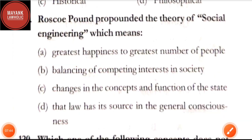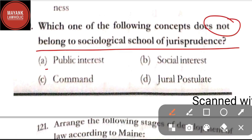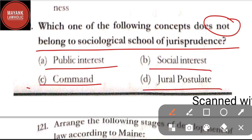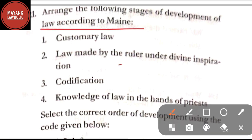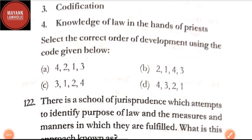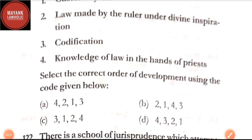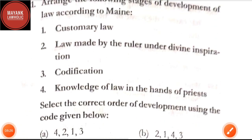Question number 120: which one of the following concepts does not belong to sociological school of jurisprudence — option A: public interest; option B: social interest; option C: command; option D: general postulate. The correct answer is option C, command. Question number 121: arrange the following stages of development of law according to Maine in order — law made by the ruler under divine inspiration; customary law; knowledge of law in the hands of priests; and codification. The correct answer is option B, order 2-1-4-3.